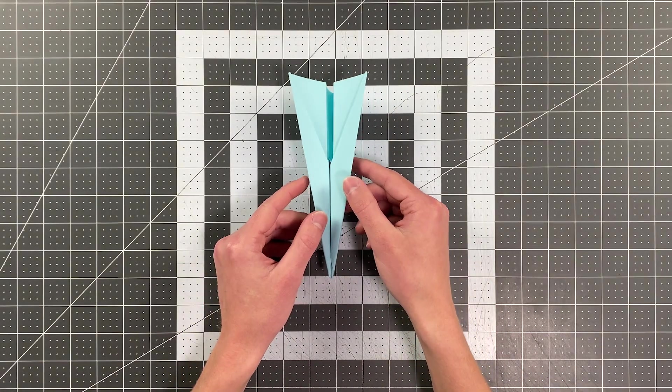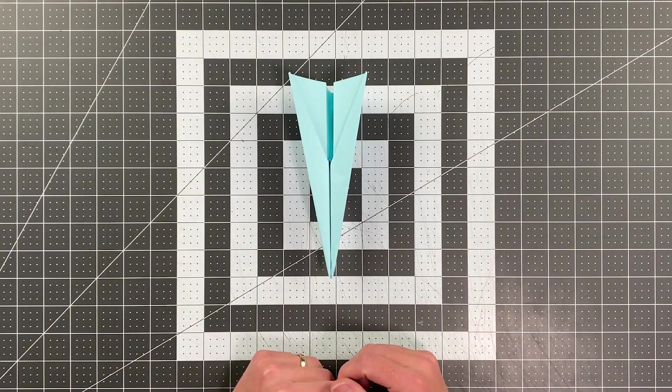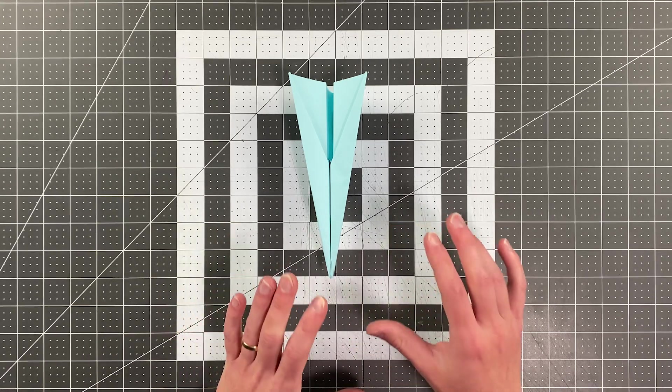In the first episode of Road to World Record, I taught you how to fold this Dart version of Rival, which is an excellent paper airplane and it's easy to fold.